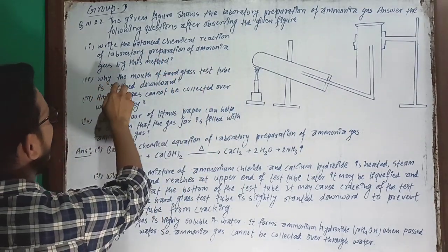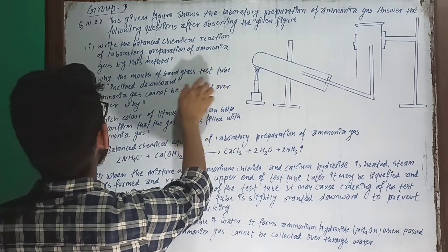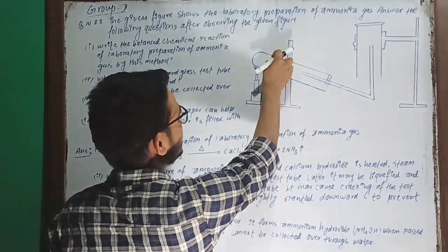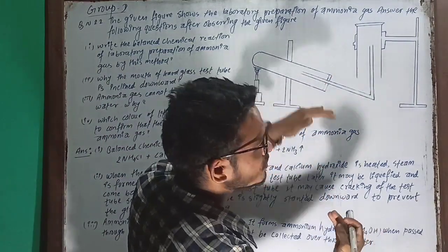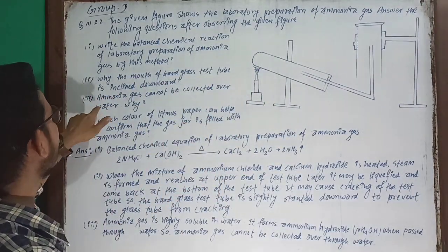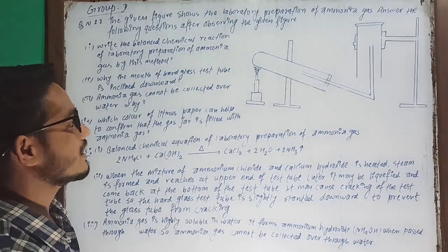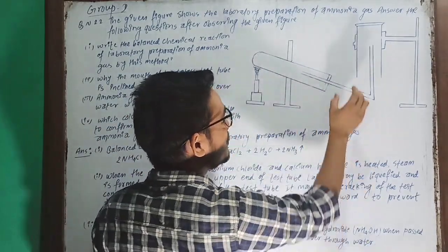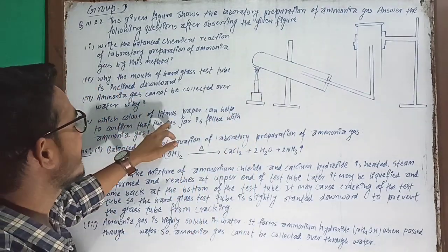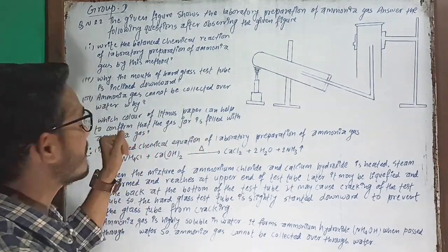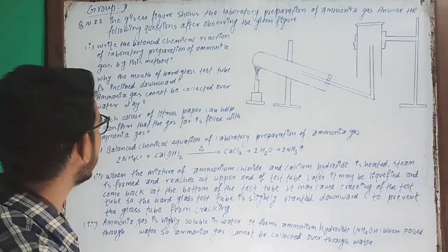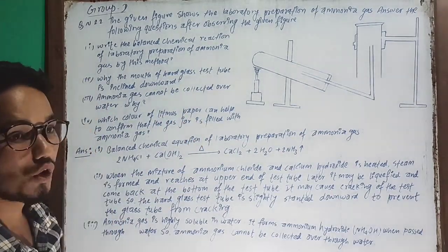First option, second option. Why is the mouth of the hard glass test tube inclined downward? Second question: ammonia gas cannot be collected over water — why? And then, which color of litmus paper can help to confirm that the gas jar is filled with ammonia gas? There will be 4 questions, 4-mark questions and point-wise answers.